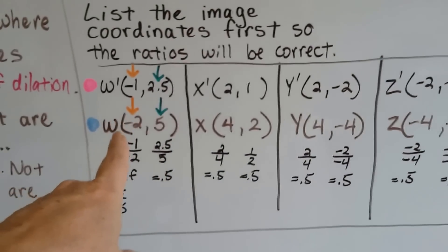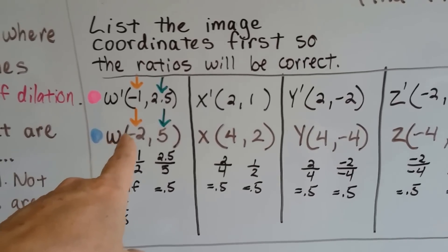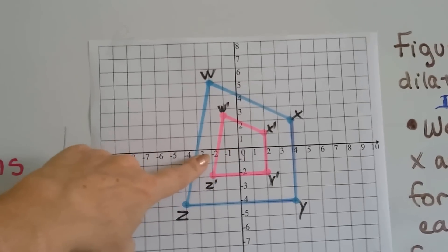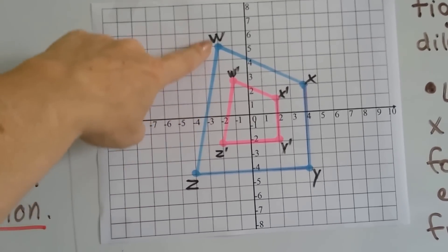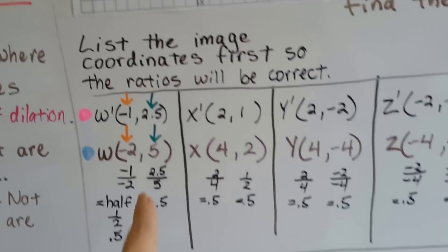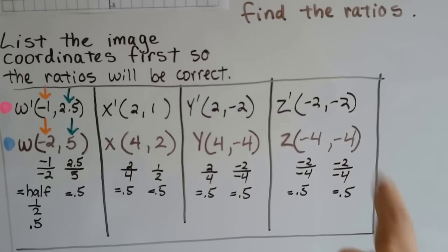And then we look at our original, our pre-image. w is at negative two, five. It's at negative two on x right here and it's at five on the y. And x is at four, two. y is at four, negative four. z is at negative four, negative four.